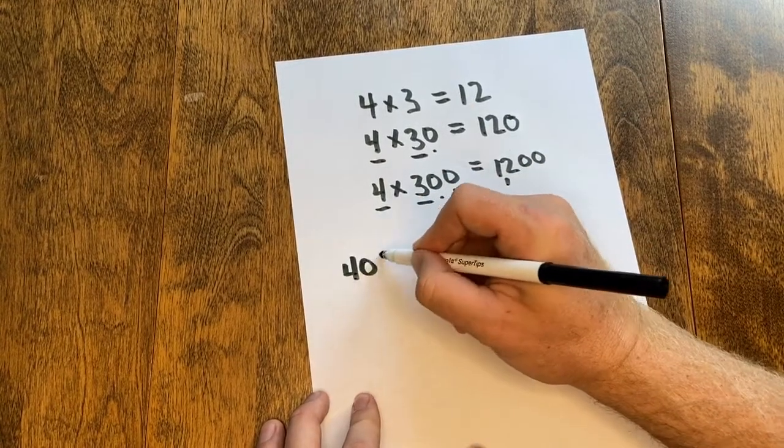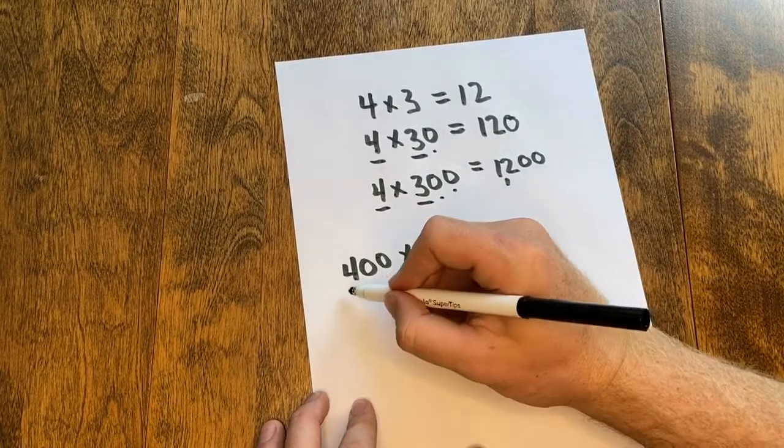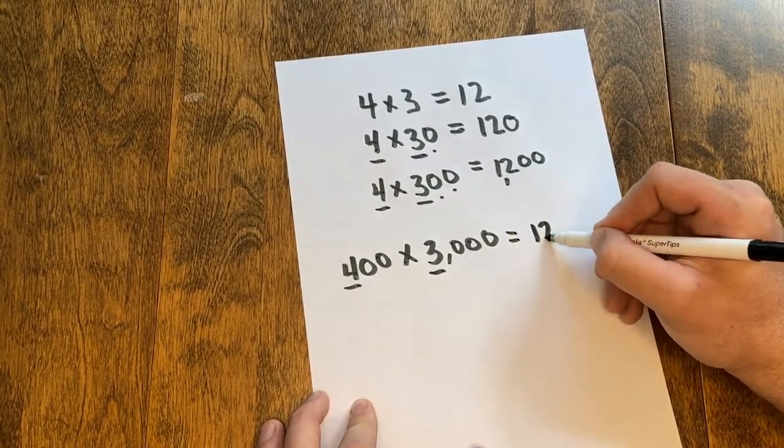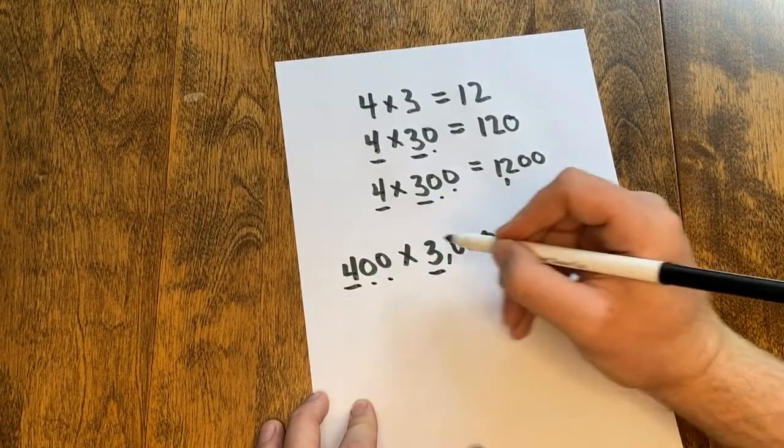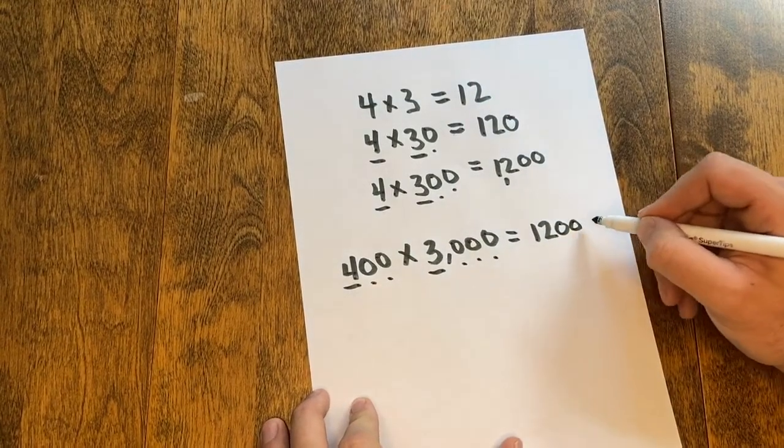We can even do that with huge numbers, 400 times 3,000. I still use the basic fact, 4 times 3 is 12. I count the zeros in both factors, 1, 2, 3, 4, 5, and add it to my product.